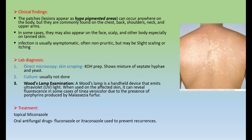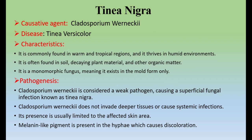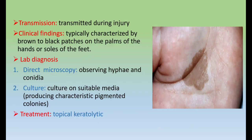The next topic is Tinea Nigra. The causative agent of Tinea Nigra is Cladosporium werneckii. It is commonly found in warm and tropical regions and is more prevalent in humid environments. It is often found in soil and decaying plant material. Unlike Tinea Versicolor, it exists only in the mold form — it is a monomorphic fungus, not dimorphic.